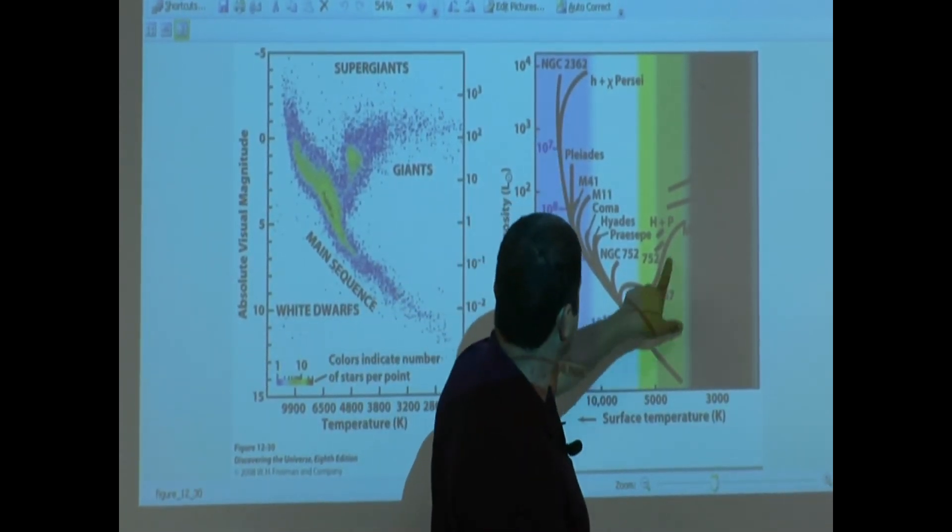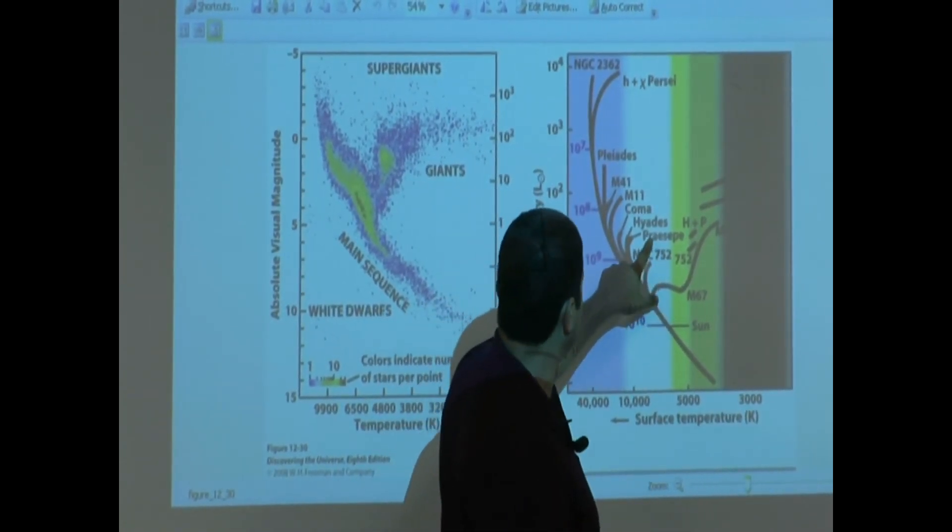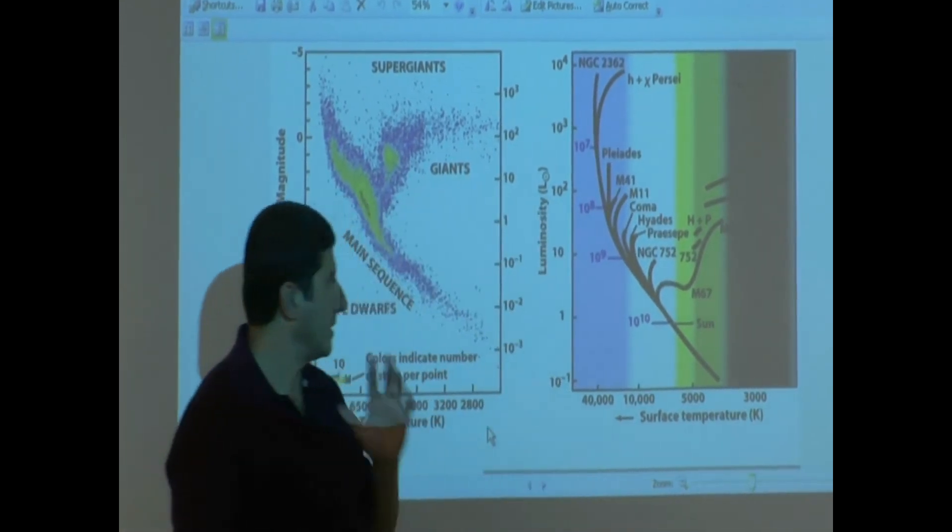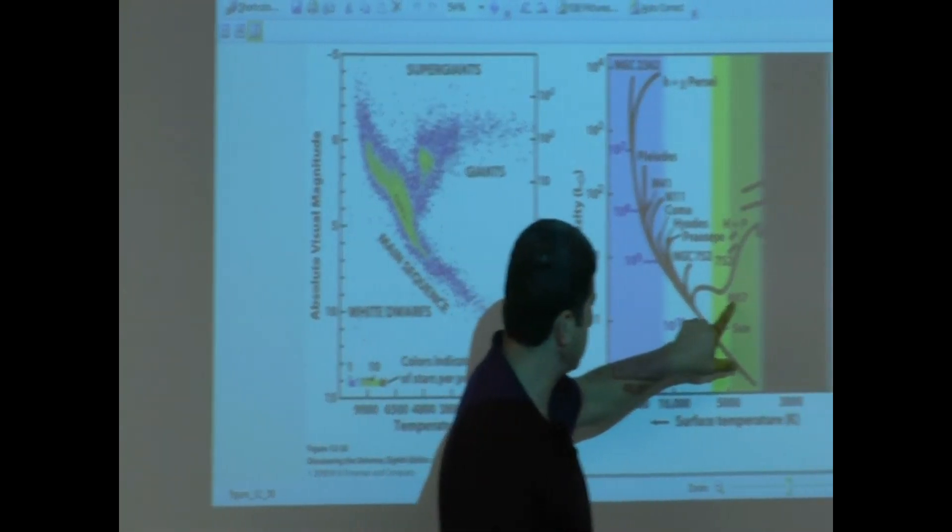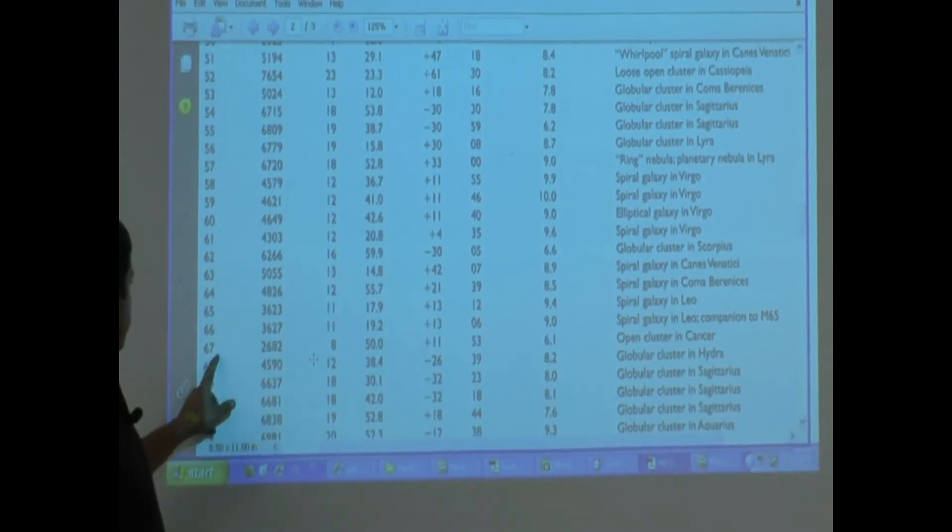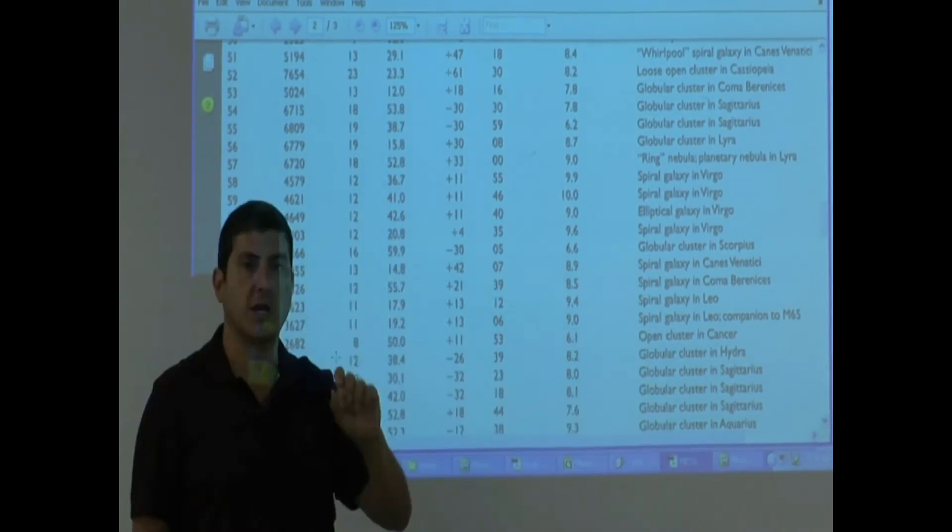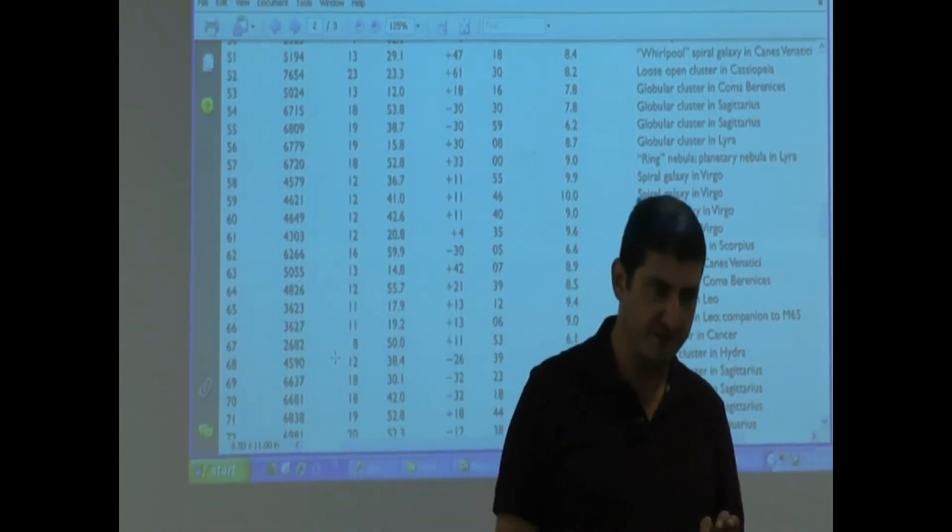The cluster M67, the cluster NGC752, Precipi, Hyades, Coma, M11, M41, Pleiades. So if we take, for example, M67, M67 actually is open. So it's probably a very old open cluster. Very old open.